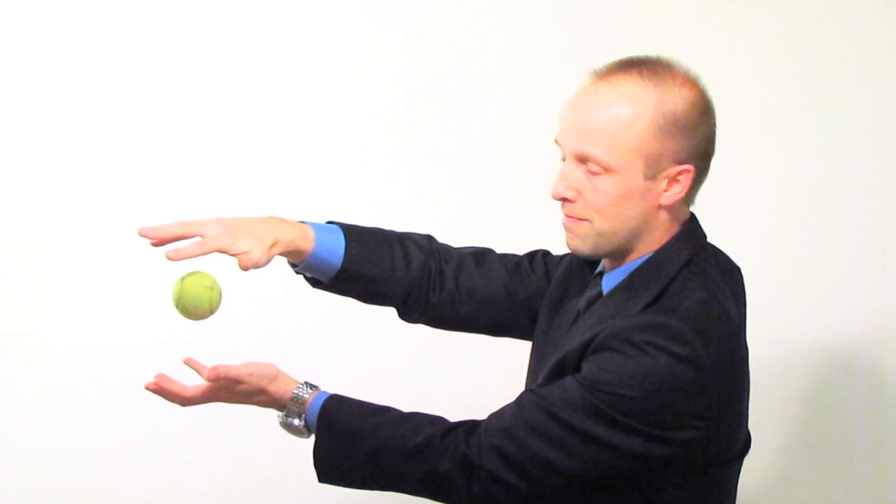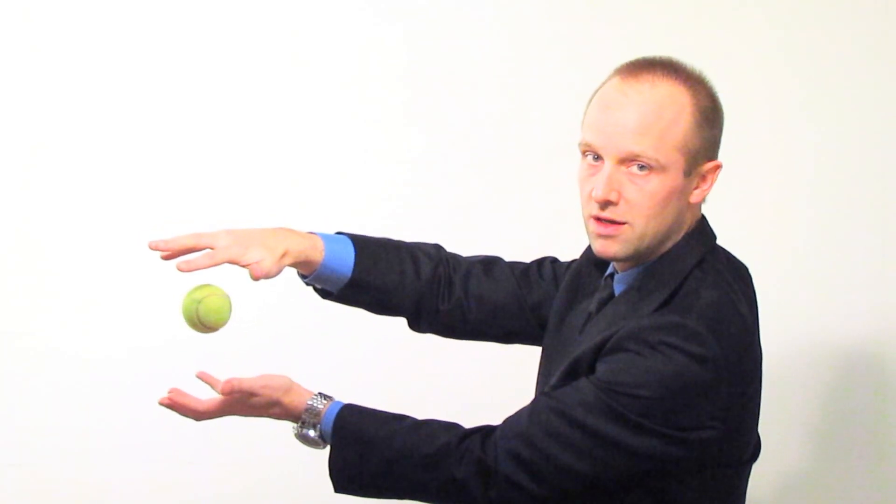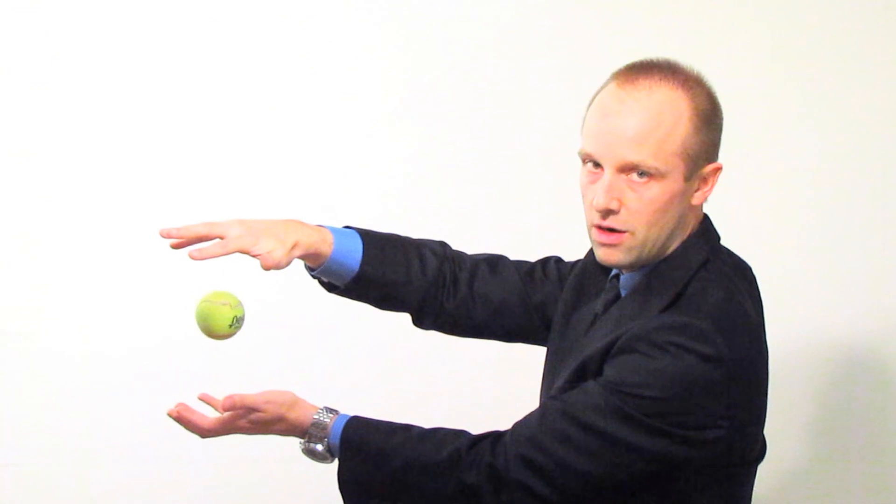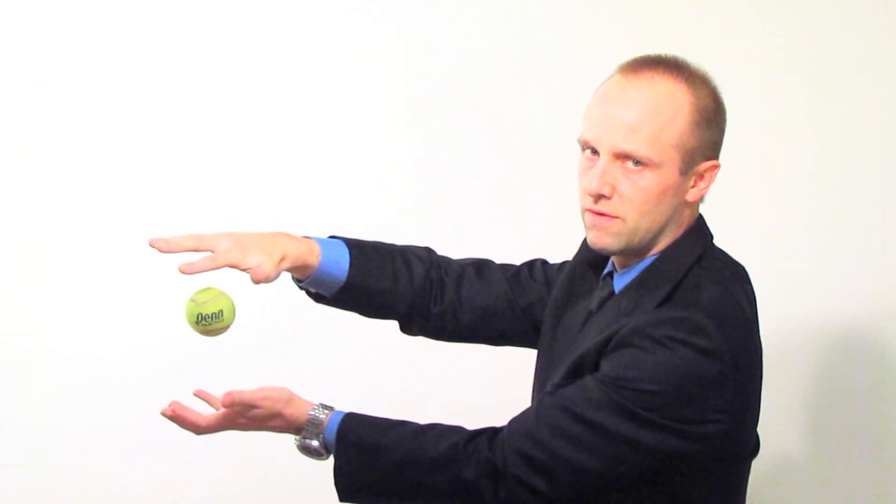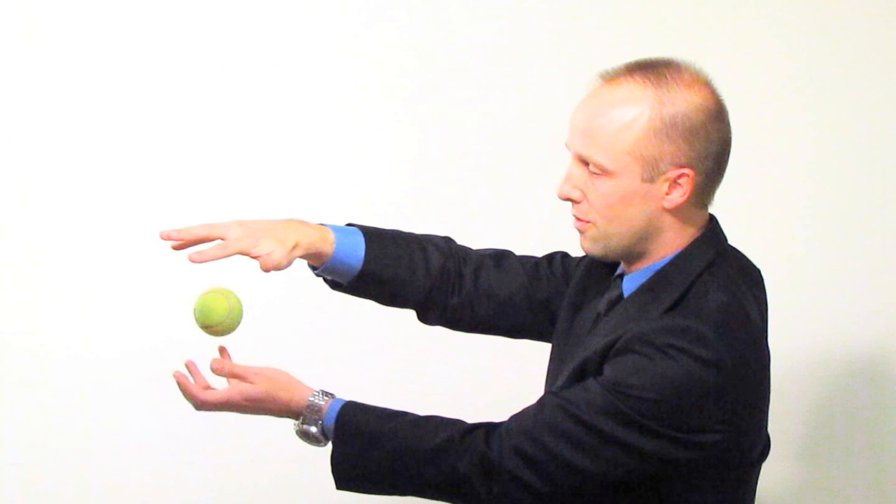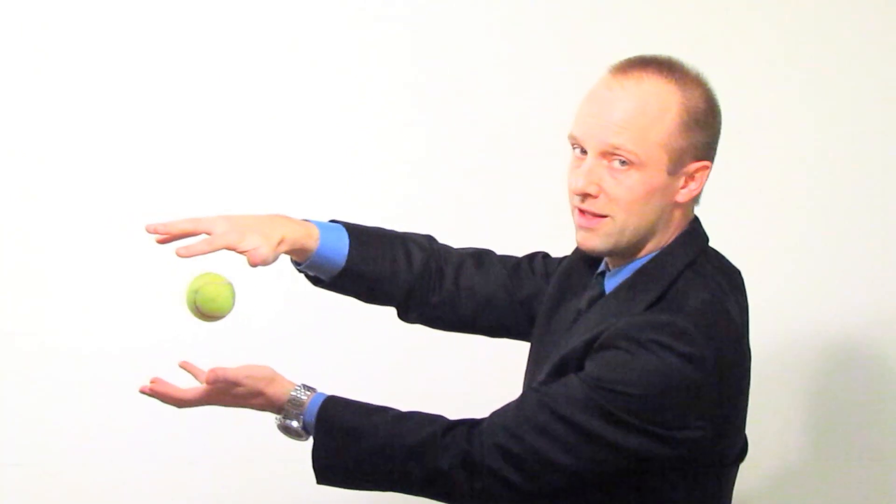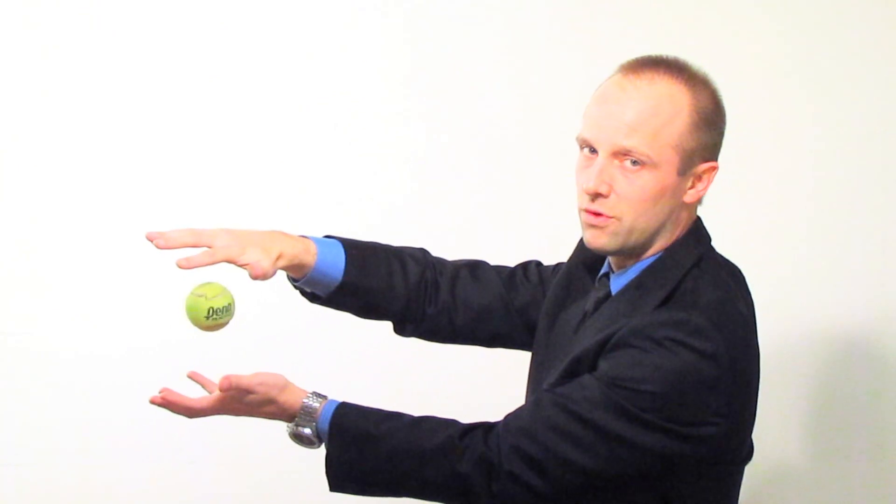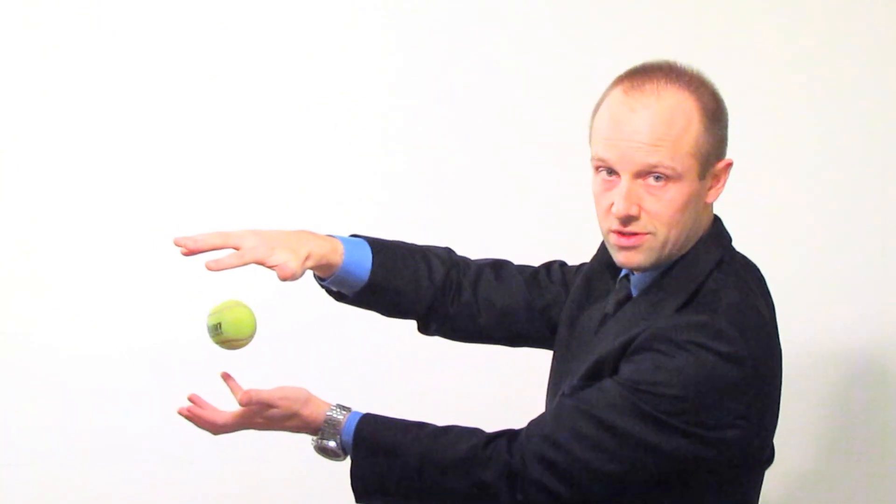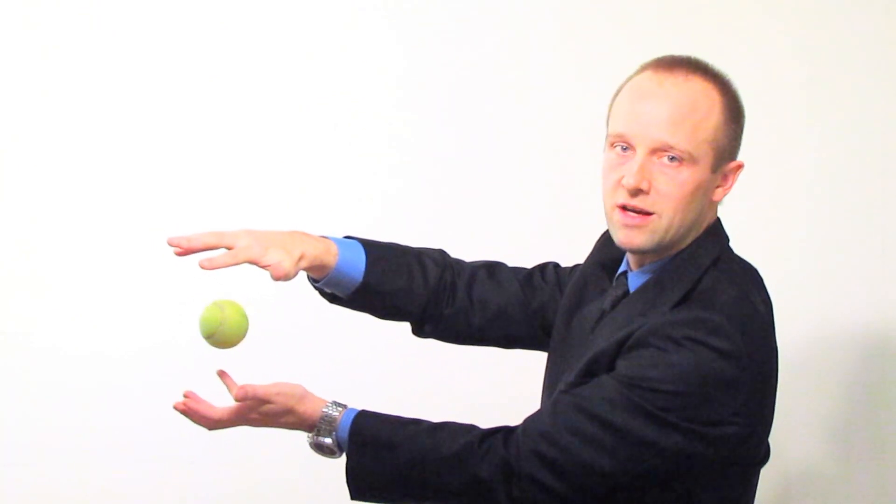At that point, when the forces are all balanced, we have a resultant force of zero. Do check the video on resultant forces to check you understand that. Weight downwards, air resistance, friction upwards, balanced out and we get a resultant force of zero. And if we've got a resultant force of zero, then this object can't accelerate anymore.